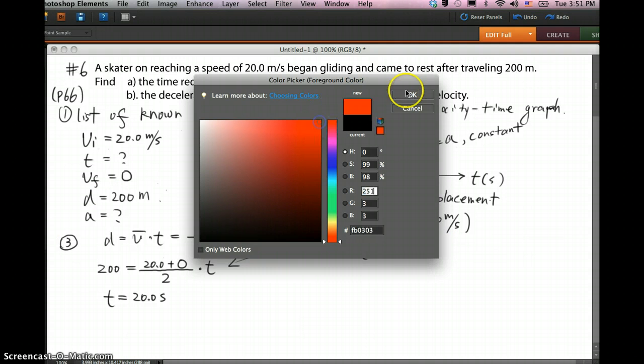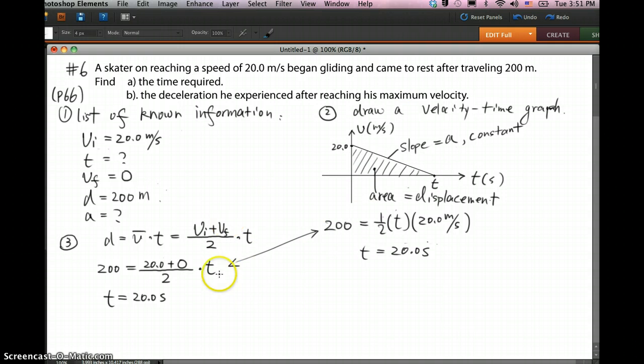For part b, we just done part a. For part b, you need to find the acceleration. That's easy. Pick a formula. Once you've got the time, the acceleration just equals v_final minus v_initial divided by t. So the final velocity equals zero minus initial is 20.0 divided by the time, which is 20.0.